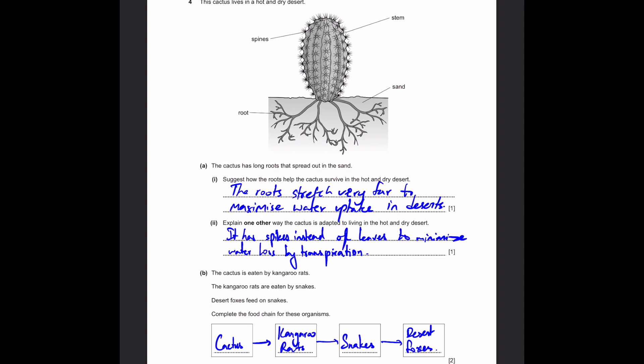The cactus is eaten by kangaroo rats. Kangaroo rats are eaten by snakes. Desert foxes feed on the snakes. Complete the food chain for these organisms. This simply means cactus, arrow, kangaroo rats, arrow, snakes, arrow, desert foxes. The arrow represents the transfer of energy. So, as the kangaroo rats eat the cactus, the cactus gives energy to the kangaroo rats. And like that, kangaroo rats to snakes and snakes to desert foxes. That's the answer.